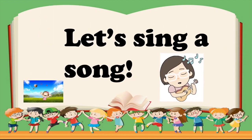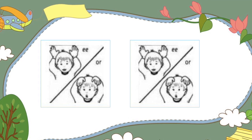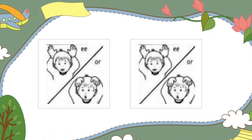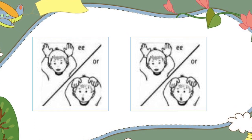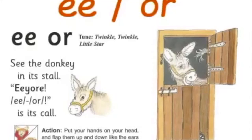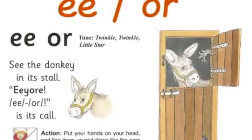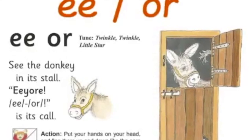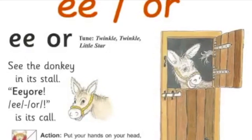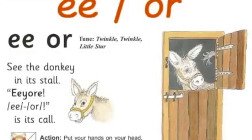Now we're going to sing a song. We will do the action. When it is E, you have to put your hands up, and when it is OR, you have to put your hands down. Okay? All right, let's sing together. See the donkey in his stall. E-OR, E-OR, is this cool?